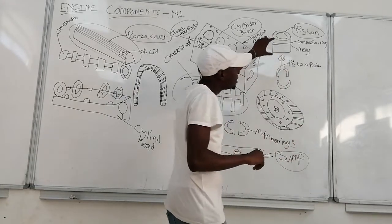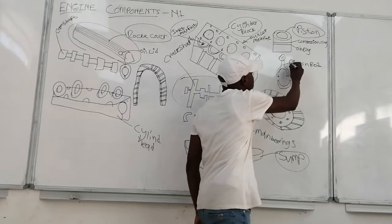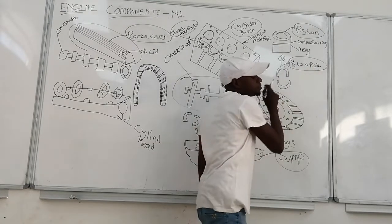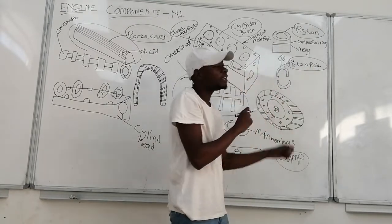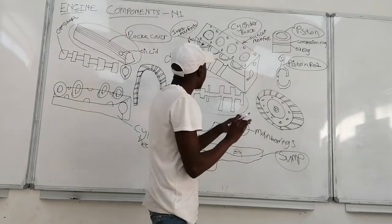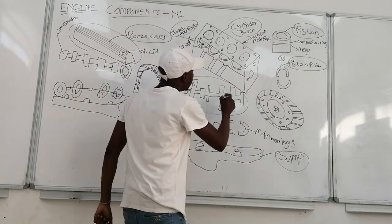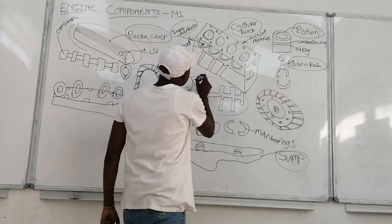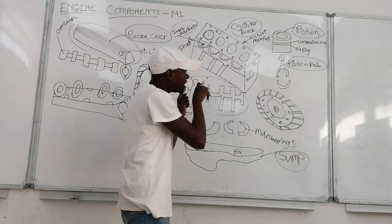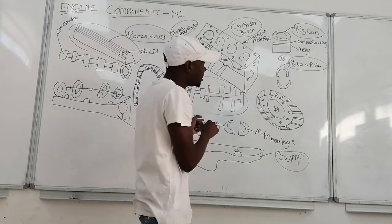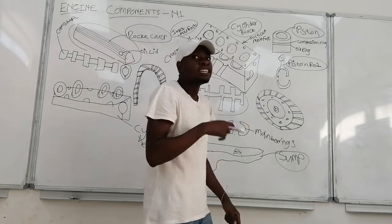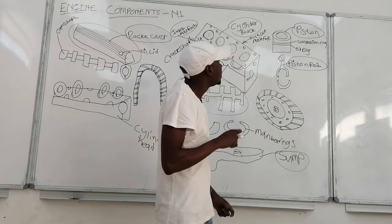The function of a piston rod is to connect the piston to the crankshaft, so that when the crankshaft is spinning, it creates that rotational movement.